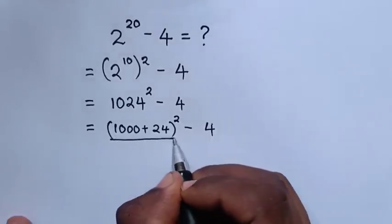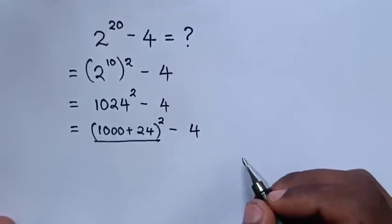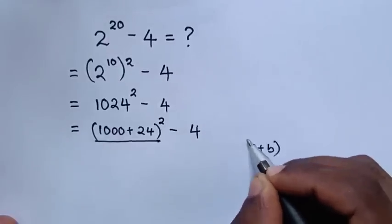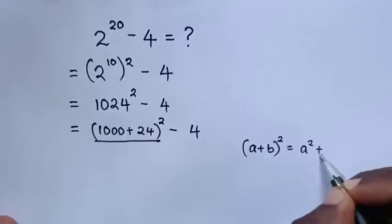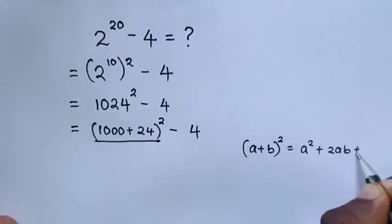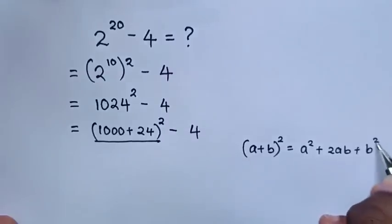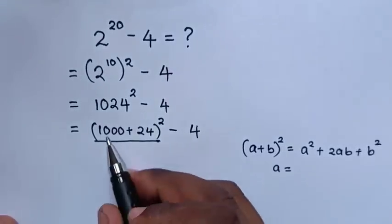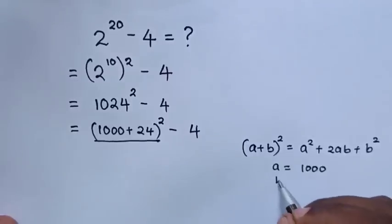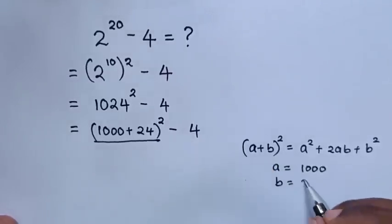From here, 1000 plus 24 squared is in the form of (a + b)^2 = a^2 + 2ab + b^2, whereas a equals 1000 and b equals 24.